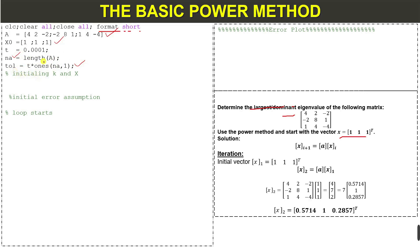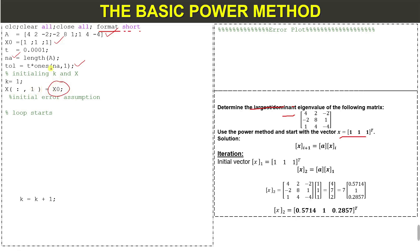Next, we are initializing the for loop, initializing k and x for the iterations. The initial vector x for all rows, column 1, is equal to x-naught, which is our starting vector. Next we have the initial assumption in our solution.